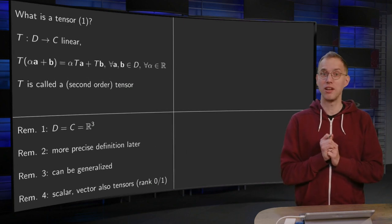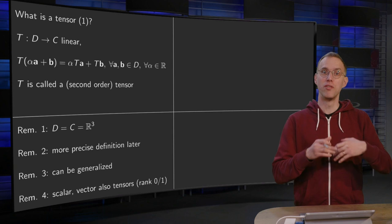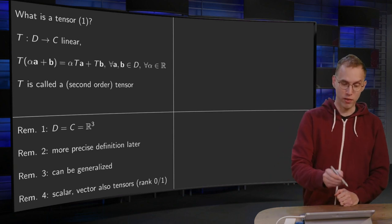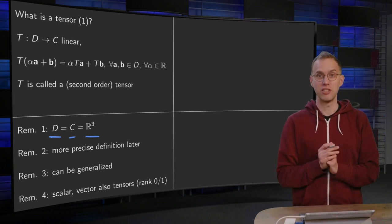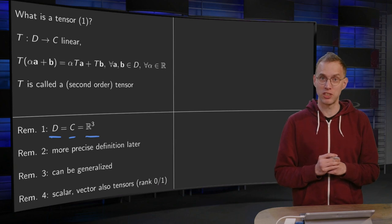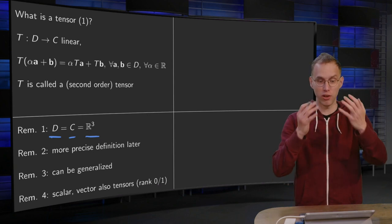Now, immediately a couple of remarks. For our goal, we'll always pick domain and codomain equal to R³. That's the domain and codomain we will need for the ensuing web lectures. So we can generalize this a lot, of course.